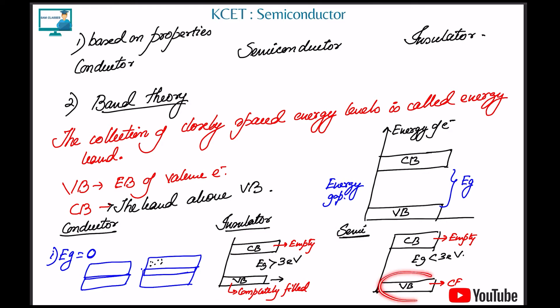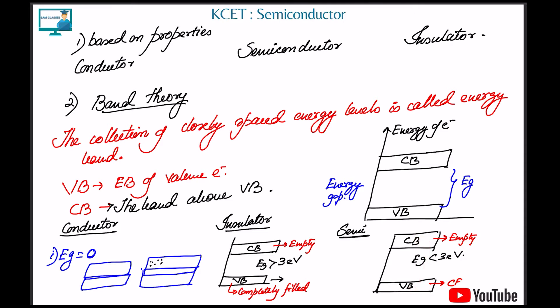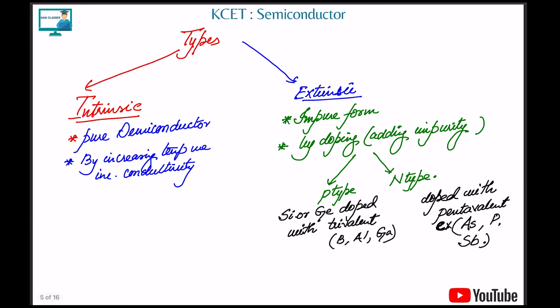In the case of a semiconductor, the gap between the valence band and conduction band is less than three electron volts. So when we supply some energy to the electrons in the valence band, they are able to jump to the conduction band and conduct electricity.